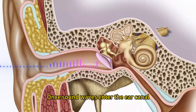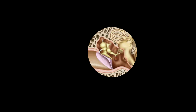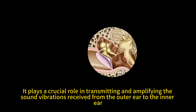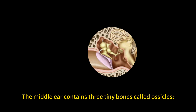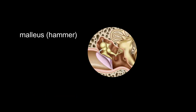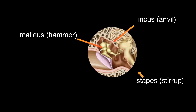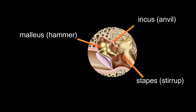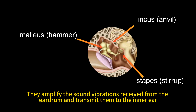Once sound waves enter the ear canal, they proceed to the middle ear. The middle ear is a small, air-filled space located between the outer ear and the inner ear. It plays a crucial role in transmitting and amplifying the sound vibrations received from the outer ear to the inner ear. The middle ear contains three tiny bones called ossicles: the malleus (hammer), incus (anvil), and stapes (stirrup). These bones form a chain-like structure, commonly referred to as the ossicular chain, and amplify the sound vibrations received from the eardrum and transmit them to the inner ear.